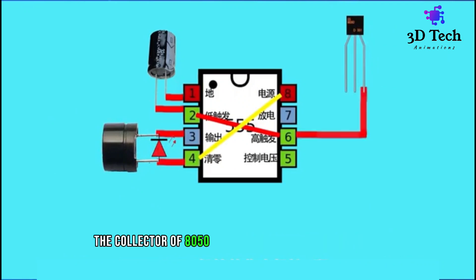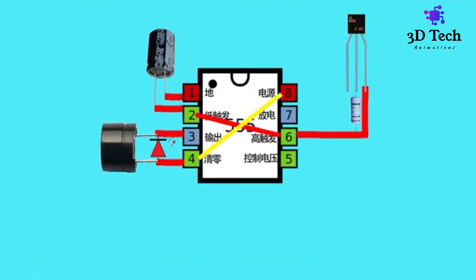The collector of 8,050 transistor is connected to pin 6. Put a 10 kilo ohm resistor between the transistor base and the pin 6. A 100 ohm resistor is connected between the 7 pin and the emitter.